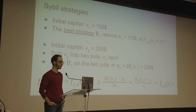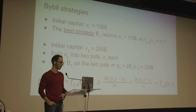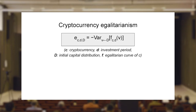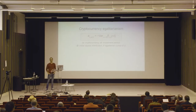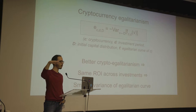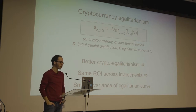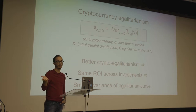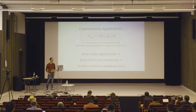Now that we have established the egalitarian curve, we can define this single number — the crypto egalitarianism metric. We take the variance of the curve and put a minus symbol in front. If we have better egalitarianism, we see the same ROI across all investments — meaning the curve is stable — and we would see zero variance. The minus symbol means zero is the maximum. The absolute value of the variance will be larger for an increasing curve, indicating less egalitarianism.